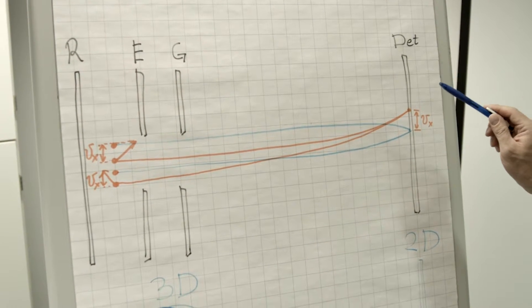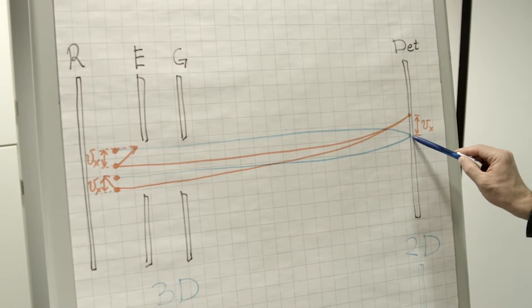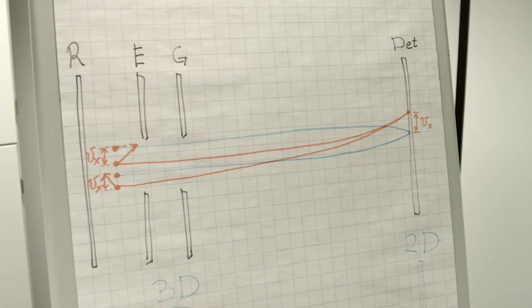The particles which have zero velocity, represented here by the blue trajectory, hit the detector exactly in the middle.